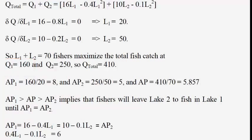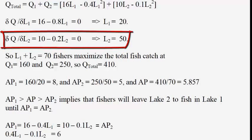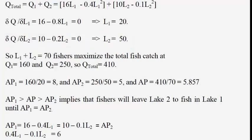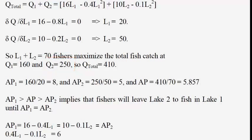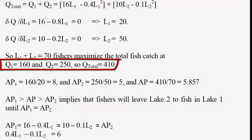To find the maximum fish catch at lake 2, we differentiate: dQ2/dL2 equals 10 minus 0.2L2. Setting equal to zero, L2 equals 10 divided by 0.2, which is 50. Plugging 50 back into the production function: 10 times 50 is 500, and 0.1 times 50 squared is 0.1 times 2500, which is 250. So 500 minus 250 gives us 250. Notice the symmetry in these functions. The total fish catch is 160 at lake 1 plus 250 at lake 2, for a total of 410 fish.